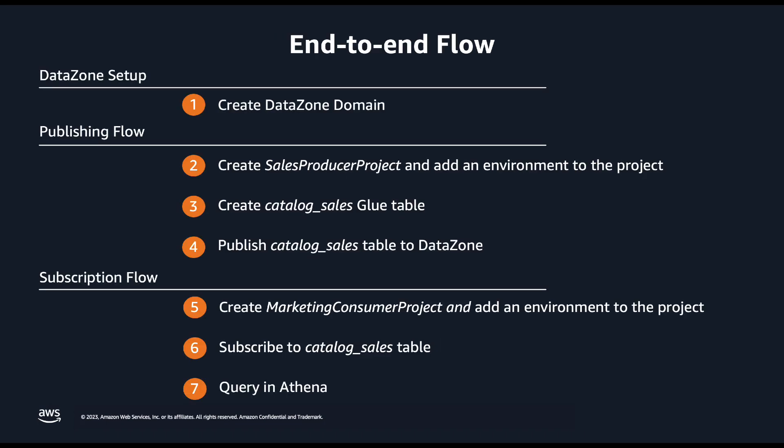Here are the different steps we will go through. We will first set up DataZone. Then we will look at the publishing flow where, as the sales team, we will create a producer project, create an environment within the project, produce some sales data, and publish it to the business data catalog. Then we will look at the subscription flow where, as the marketing team, we will create a consumer project, create an environment within the project, subscribe to the sales data published by the sales team, and query that data in Athena.